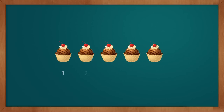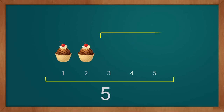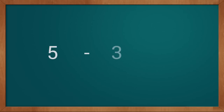You have five cupcakes. We have a total of five cupcakes. You gave three cupcakes to your friend — one, two, three. Now we see how many cupcakes we have left: one, two. We have a total of two cupcakes. This way we find five minus three equals two.